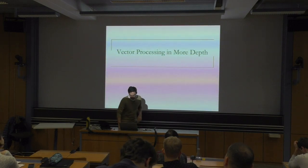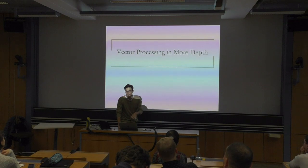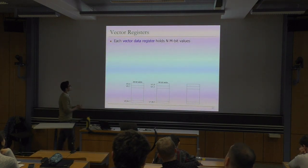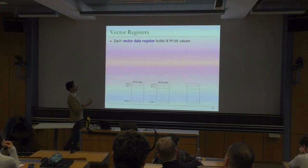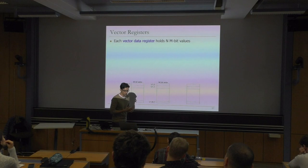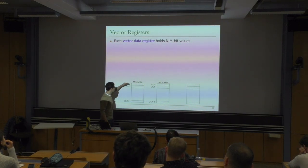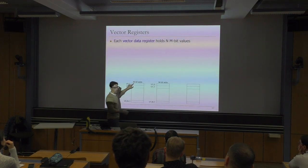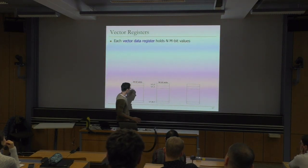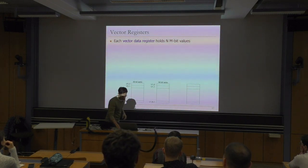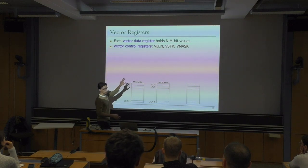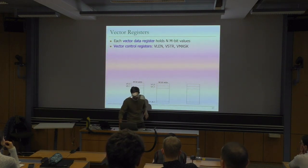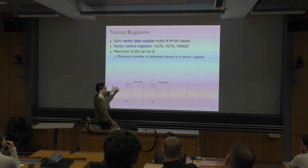Vector processing in more depth. Each vector register is able to hold N n-bit values - it can store up to N elements of n bits each. We have vector control registers: the vector length register, the vector stride register, and a third one that is super important - the vector mask.